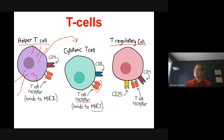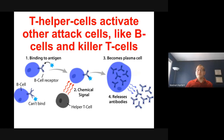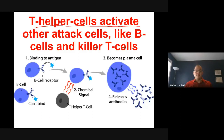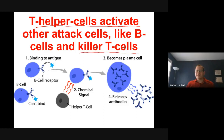T regulatory cells — Tregs — basically stop the immune system, calm it down. You don't want your T cells just running around all the time. Helper T cells are also going to help B cells. B cells are the ones that produce those big Y-shaped antibodies, which go and bind to antigen. The only way you start the B cell response is that you have activated helper T cells — they're the only ones that allow you to do that. You need helper T cells to activate that full immune response, otherwise it just remains regular.